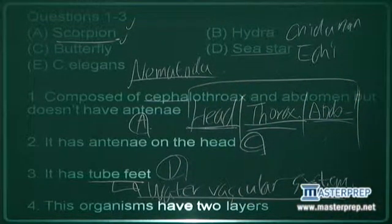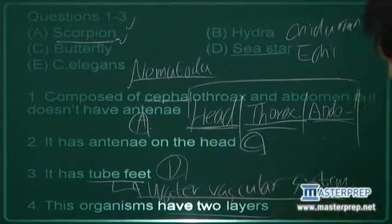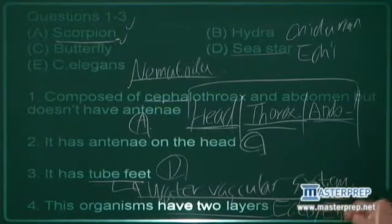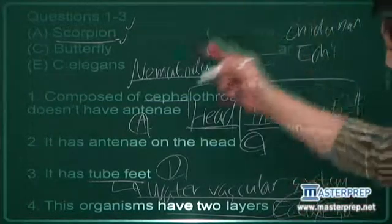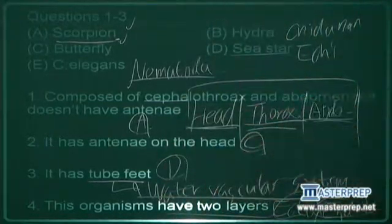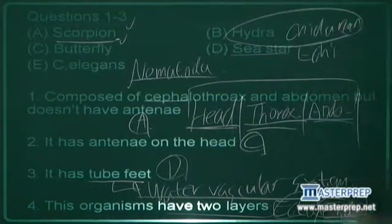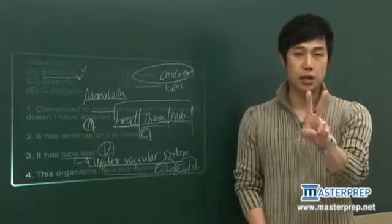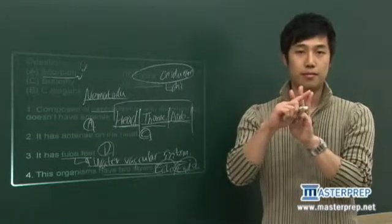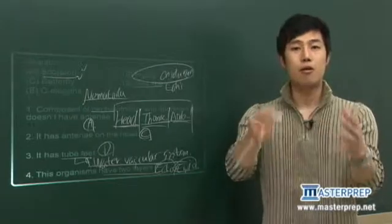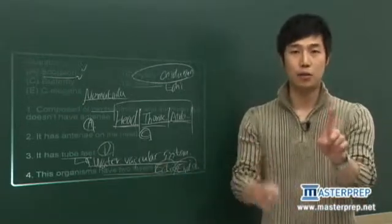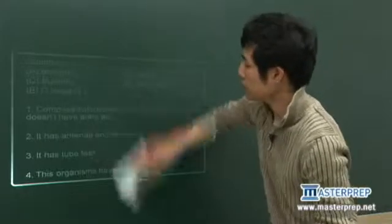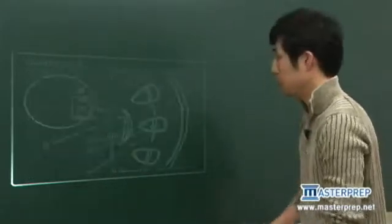Number four, these organisms have two layers. Two layers means very primitive. That means it doesn't have mesoderm, only ectoderm and endoderm. The entire cells are in direct contact with the surroundings or the environment. So it's talking about cnidarian, hydra. For the cnidarian, you need to remember three different organisms. First, hydra. Second, sea anemone. And thirdly, jellyfish. They're all two-layered organisms and they only have ectoderm and endoderm, no mesoderm.